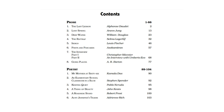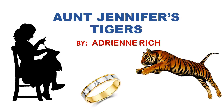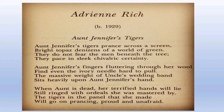Aunt Jennifer's Tigers by Adrienne Rich was written in 1951 at the beginning of Rich's poetic career. The poem is a protest against male chauvinism and patriarchy, which seeks to marginalize women. It makes a clear statement against the traditional marriage relationship where women take a secondary role and are subjected to humiliation and oppression by the hands of patriarchy, especially by the husband.